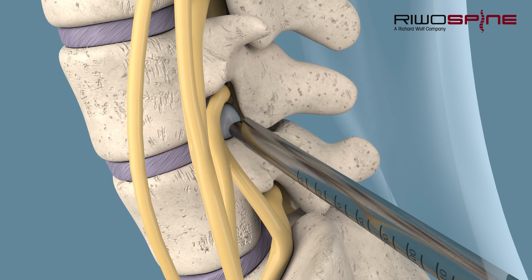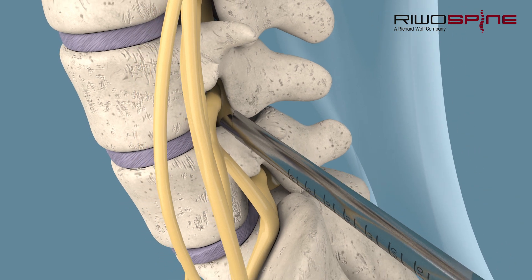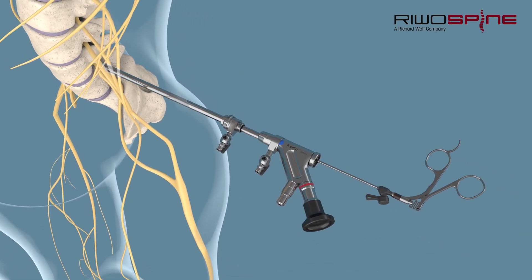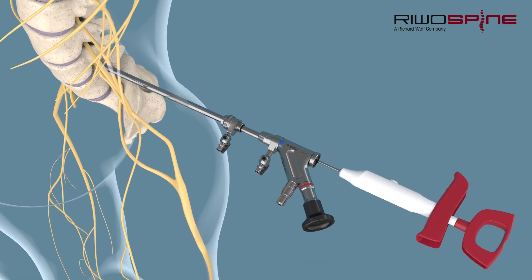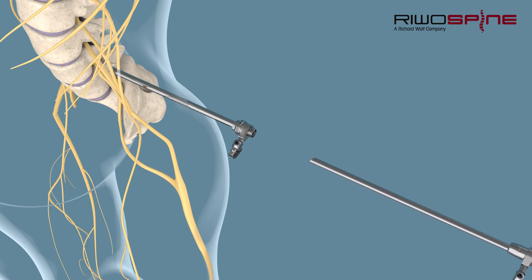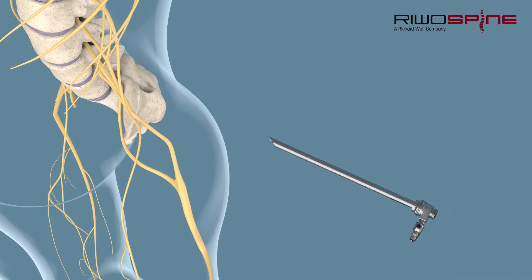The herniated intervertebral disc tissue is carefully extracted with the help of forceps to perform a decompression of the nerve structures. For coagulation of vessels and tissue, a specially designed electrode is needed. After the operation, the instruments are carefully removed.